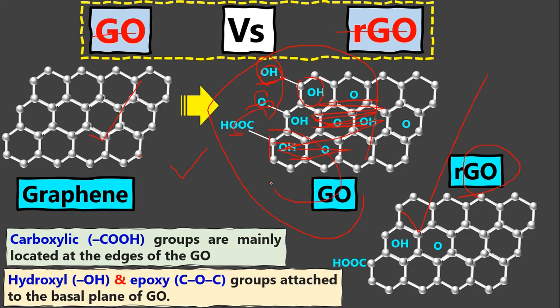The degree of graphene oxide depends on the oxidation agents — how strong and how concentrated the solution is. And the degree of reduction depends on how powerful the reducing process is to convert graphene oxide into reduced graphene oxide. If the reducing agents are powerful enough to remove the maximum number of functional groups, the RGO is essentially more or less just like graphene.